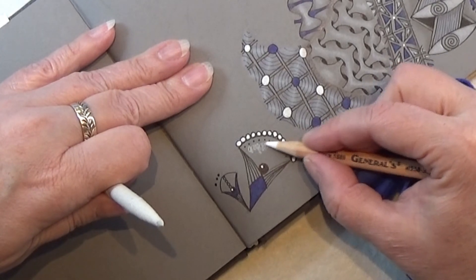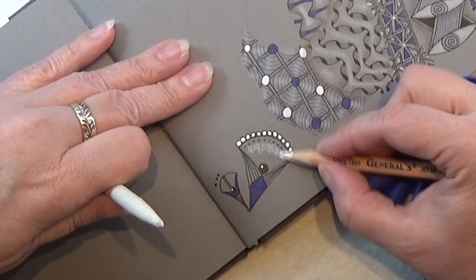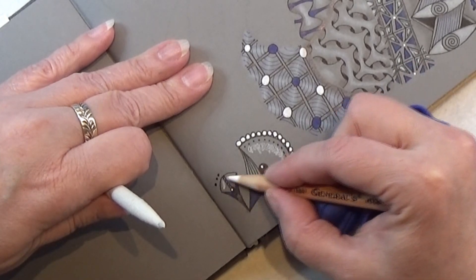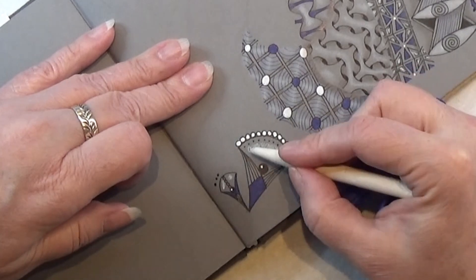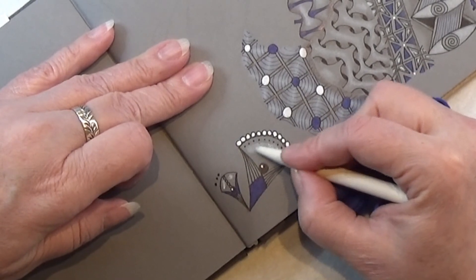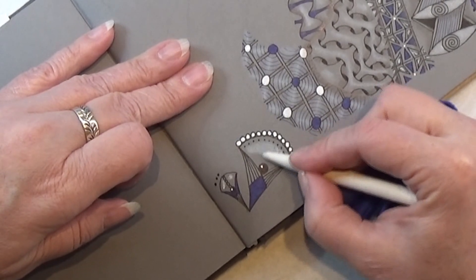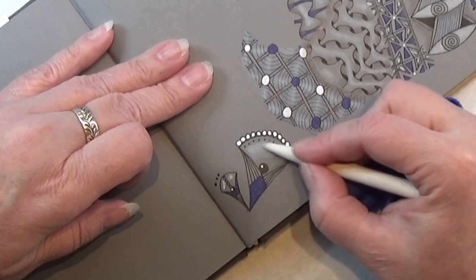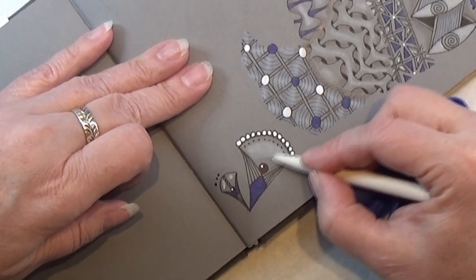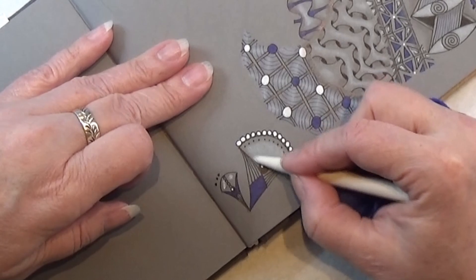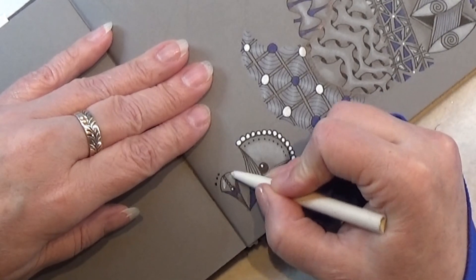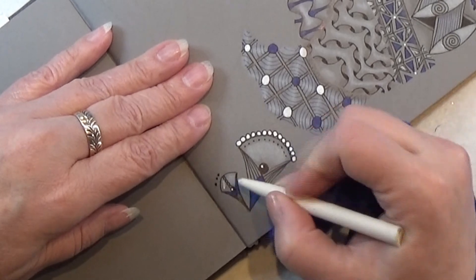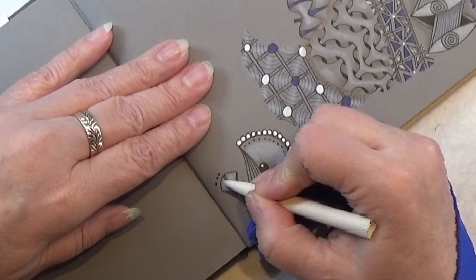I am just taking my white charcoal and popping in a tiny bit of white here on the top of the shape and then just dragging it down this side or down to the orb. There we go.